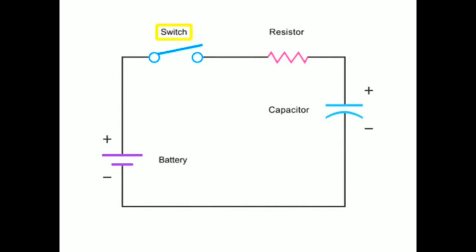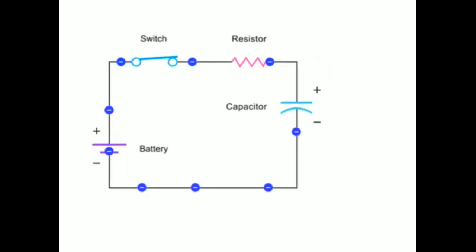When the switch is closed, electrons flow, and charge builds up on the capacitor's plates. This causes the voltage across the capacitor to increase.